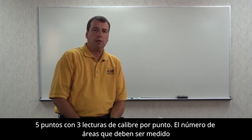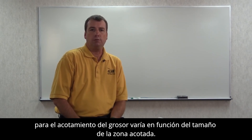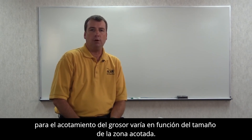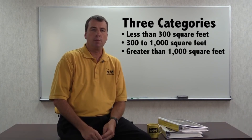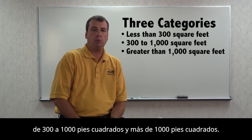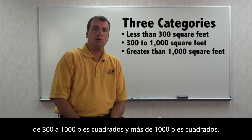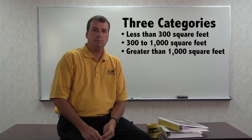The number of areas that must be measured for coating thickness varies depending on the size of the coated area. There are three categories of coated area, including less than 300 square feet, 300 to 1,000 square feet, and greater than 1,000 square feet.